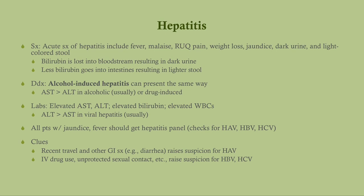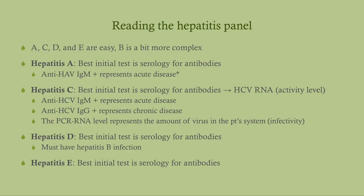The key differential for viral hepatitis is alcohol or drug-induced hepatitis. If AST is elevated out of proportion to ALT, it's probably alcohol or drug-induced. If ALT is elevated out of proportion to AST, it's probably viral in origin. All patients with jaundice and fever should get a hepatitis panel — hep A, B, and C. Recent travel or GI symptoms like diarrhea raise suspicion for hep A; IV drug use or unprotected sexual contact raises suspicion for hep B and C.